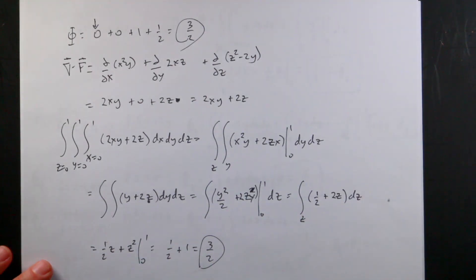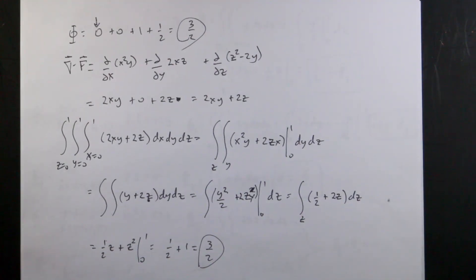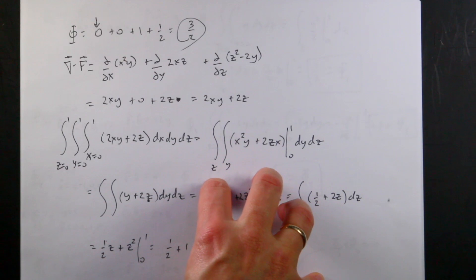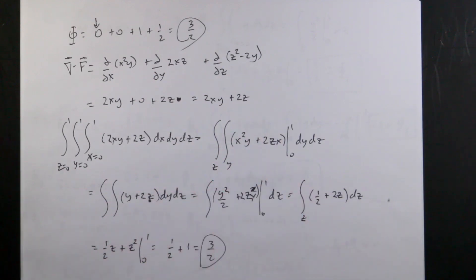So one half plus one equals three halves. Three halves equals three halves — it worked! And I know that was a lot of work, but I think even though it's a lot of work, it's good to see that it all works out in the end. That's an example of the divergence theorem. I want to do the exact same problem in Python numerically. One of the nice things about Python is it doesn't matter what surface you use — it should still work. So we'll do that in the next part.